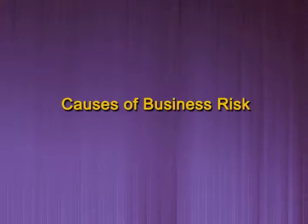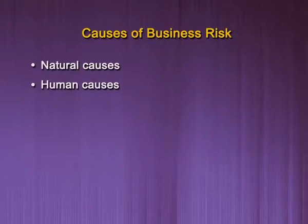Now let us move to the causes of business risk. The first cause is natural causes — natural calamities like flood and earthquake can happen at any time and this type of risk cannot be predicted beforehand. The second one is human causes: risk which arises due to dishonesty of human beings, like strikes and lockouts. The third is economic causes — demand, fashion, or political policy can be changed any time, so economic causes are always present in business.